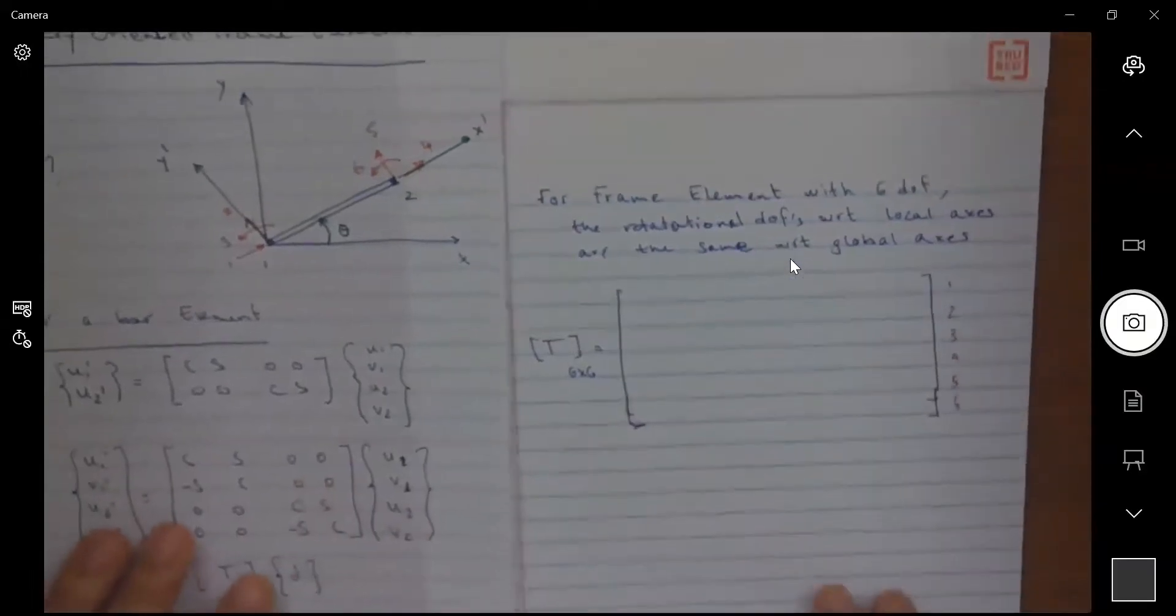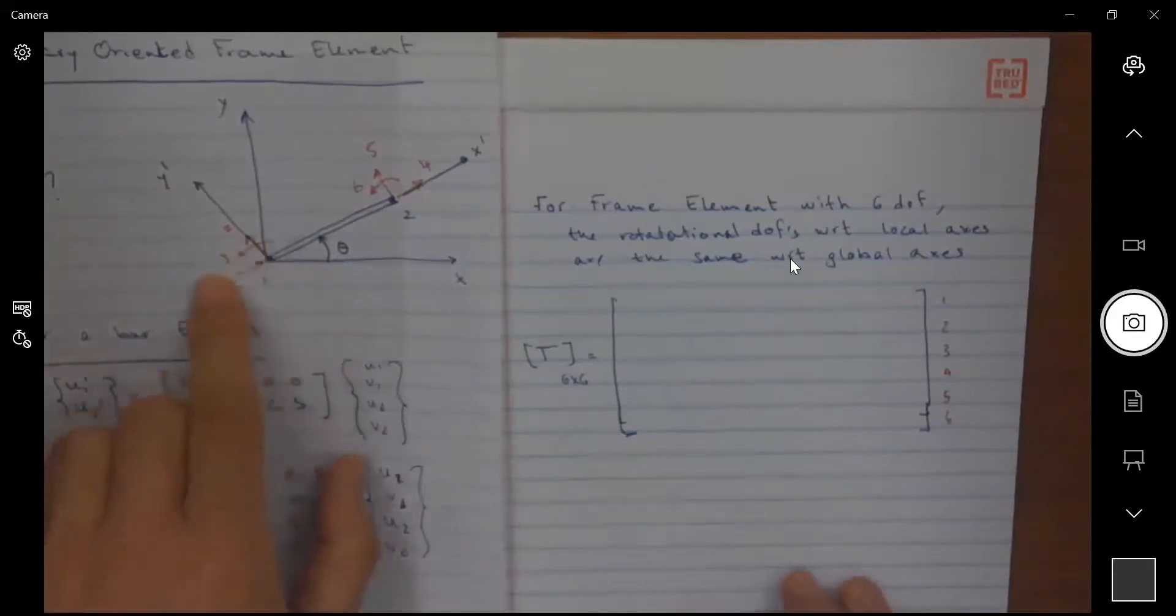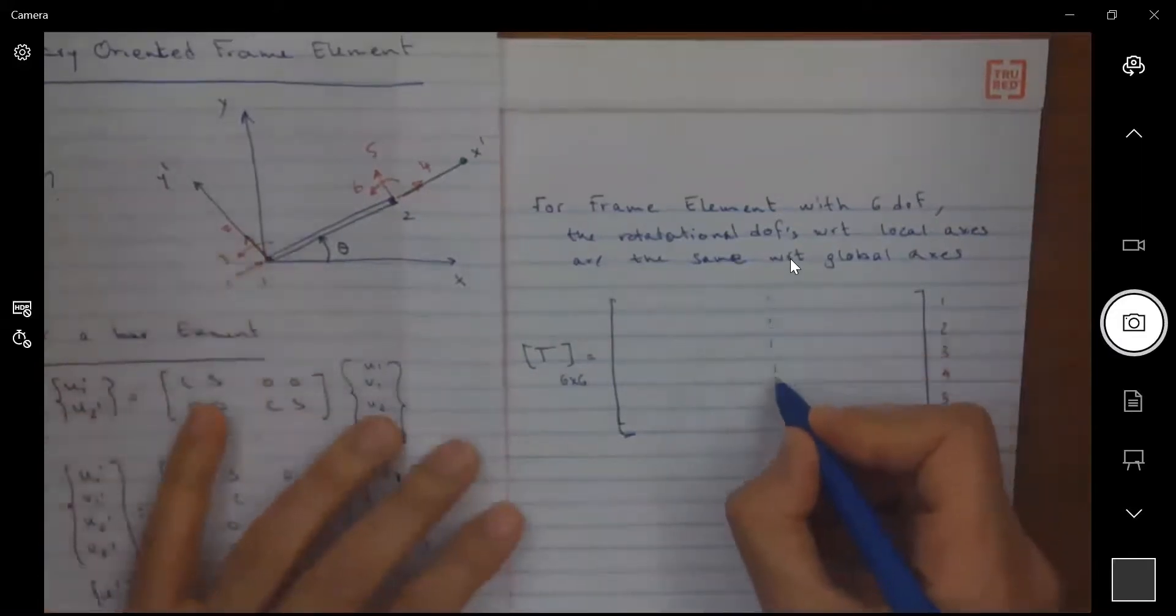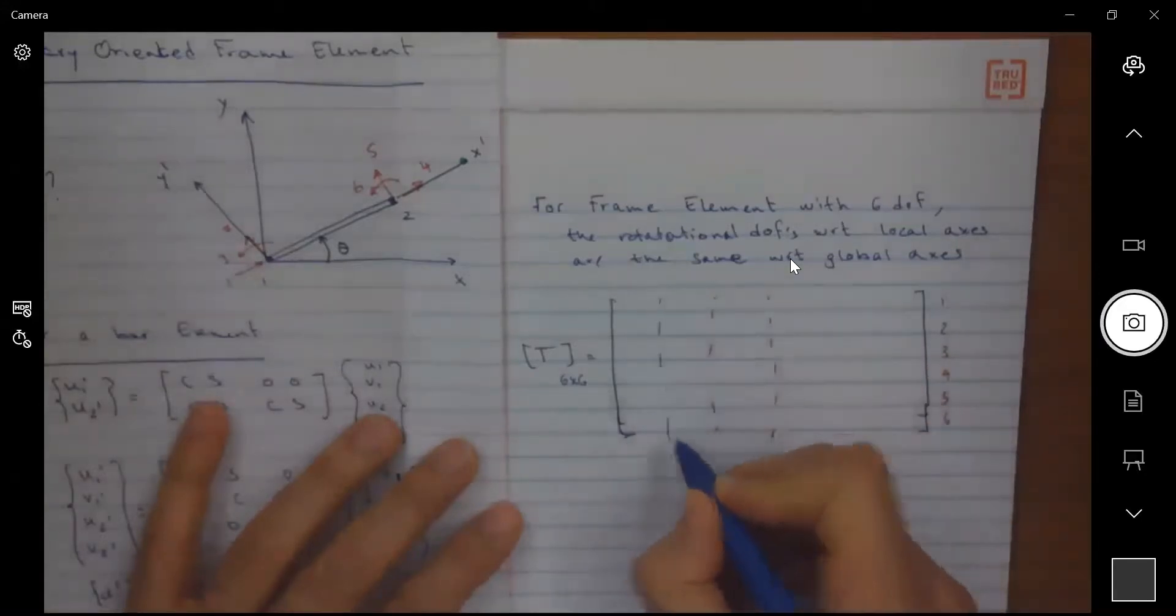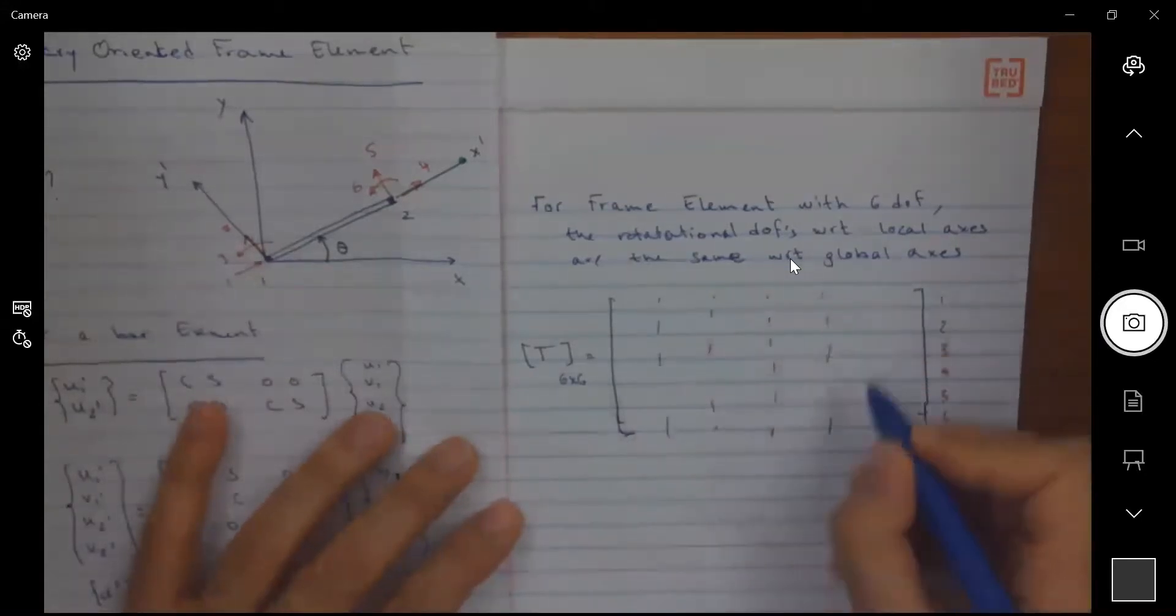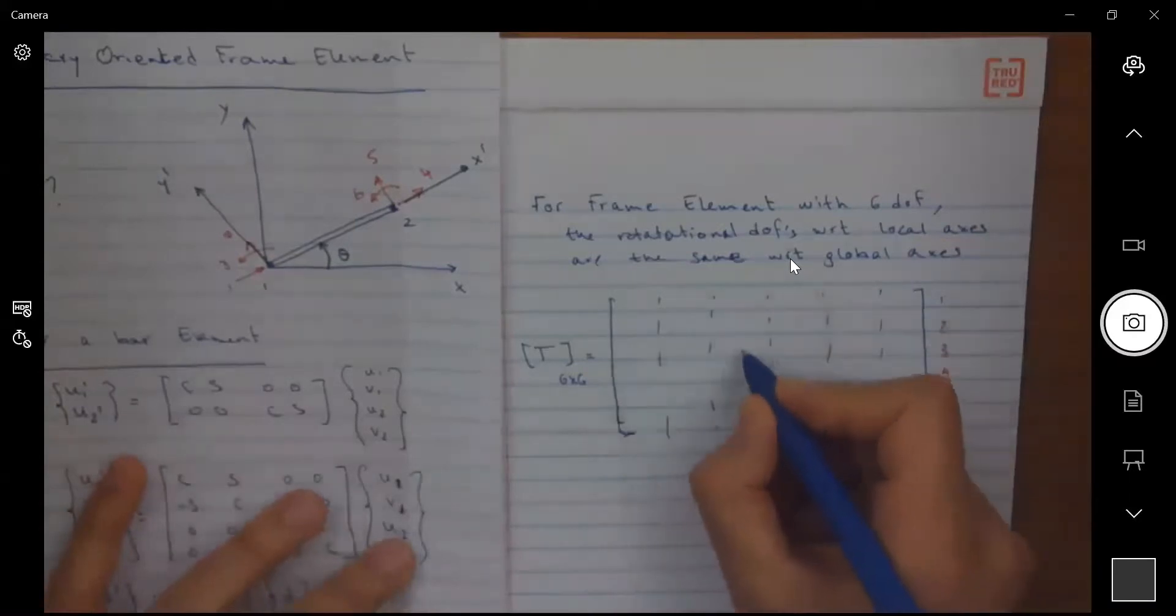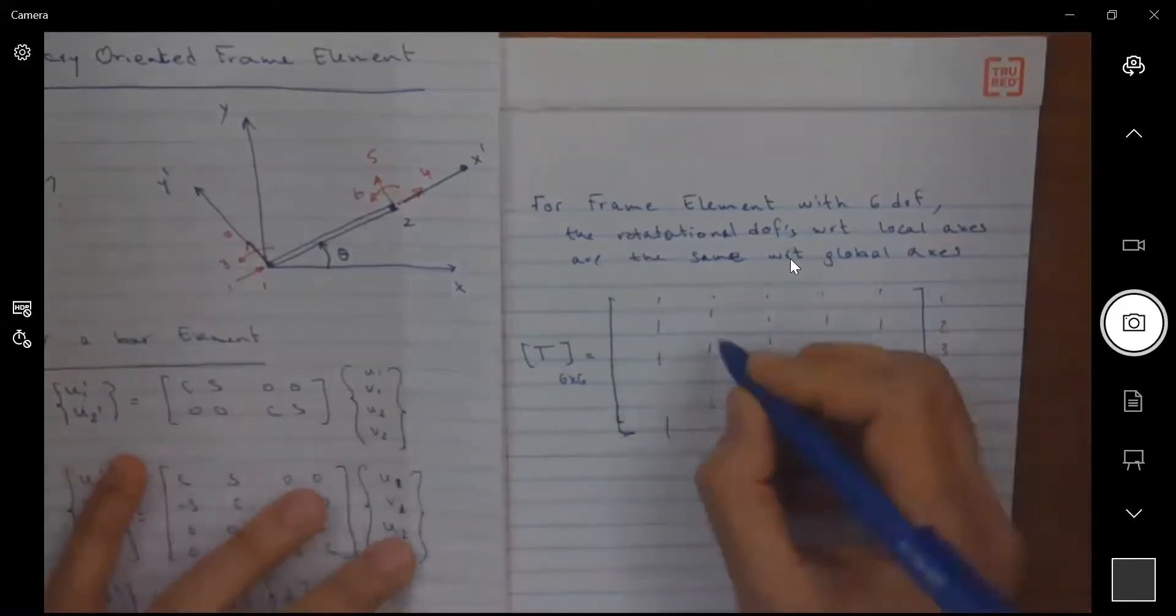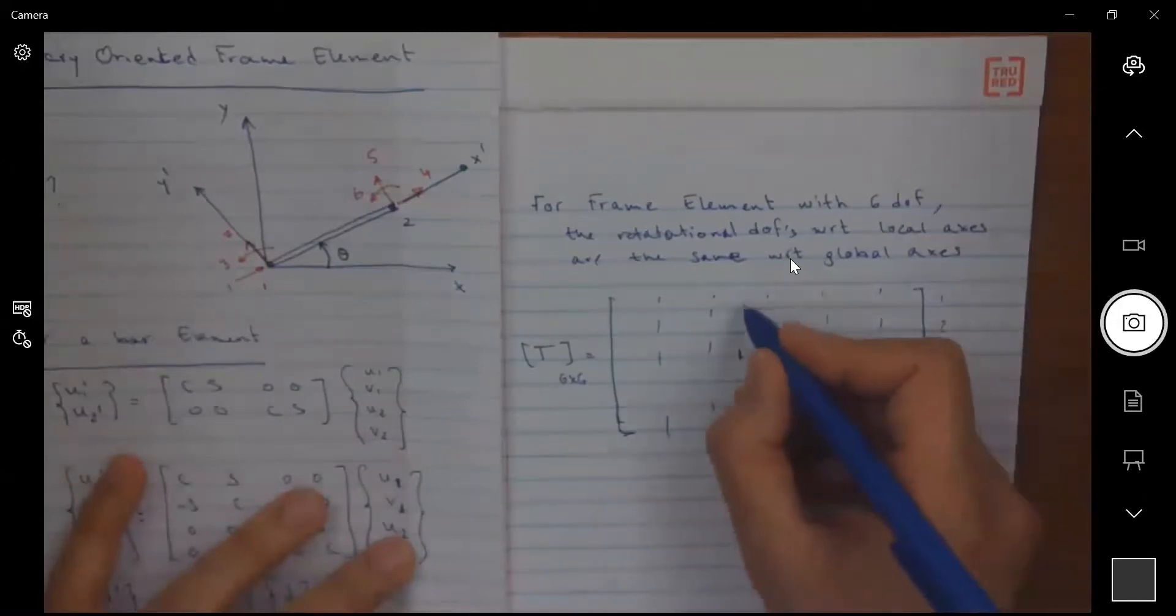So when I'm looking at degree of freedom for the rotation three, I am gonna see a one here and one here and zeros everywhere else.